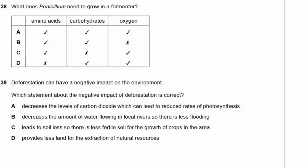Question 38: What does Penicillium need to grow in a fermenter? Penicillium is a fungus. It needs amino acids to make proteins, carbohydrates for energy, and oxygen for aerobic respiration. The answer is A.